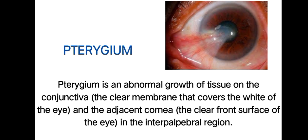First of all, the Pterygium. Pterygium is an abnormal growth of tissue on the conjunctiva — the clear membrane that covers the white of the eye — and the adjacent cornea, the clear front surface of the eye, in the interpalpebral region.